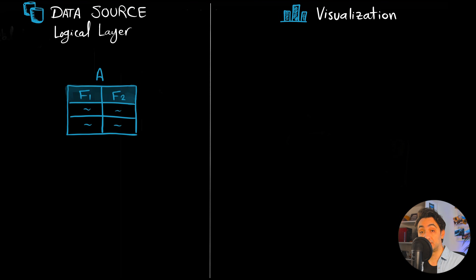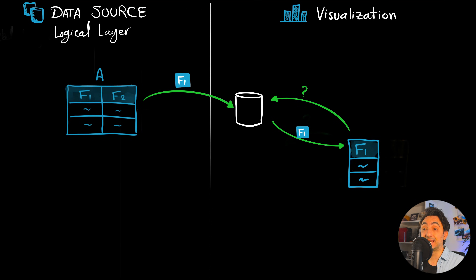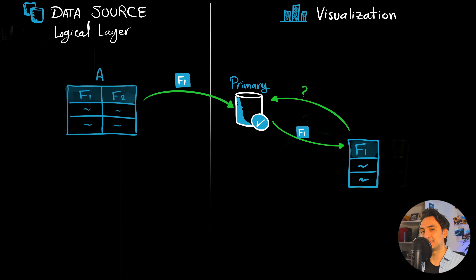At the visualization level we want to use the data from field F1. Tableau is going to send a query to the data source to get the data of F1 and show it in the visualization. Since this data source was the first one to be queried and used, Tableau is going to call it a primary data source. In Tableau, anything that is primary gets the blue color — that's why you will see a blue icon indicating that this data source is a primary one.